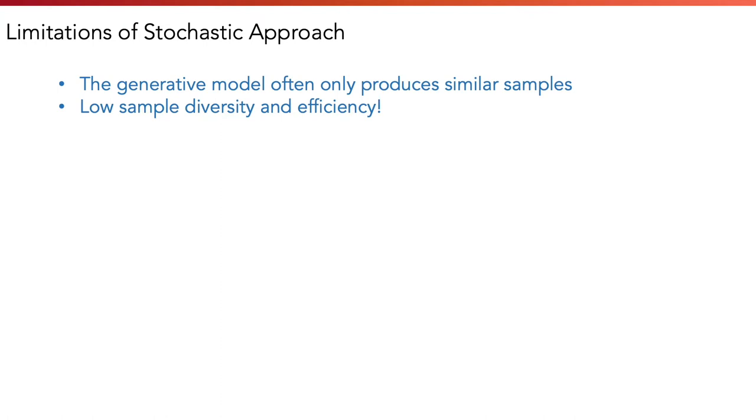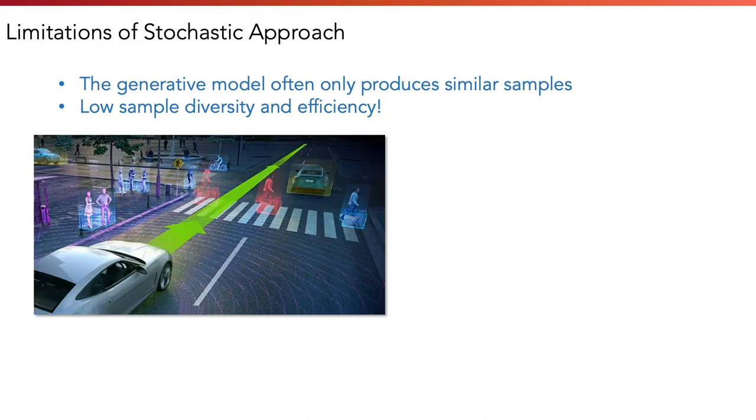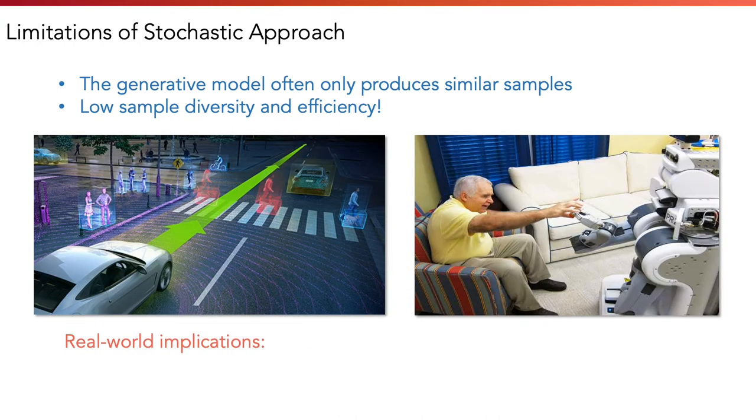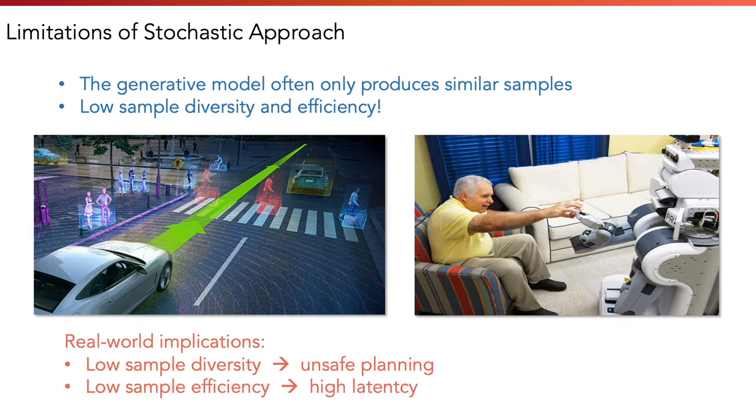This has serious real-world implications, because in many applications, like self-driving vehicles or assistive robots, low sample diversity can lead to unsafe planning because the system cannot anticipate various possibilities. And low sample efficiency means the system has to compute many samples, which can lead to high latency in real-time applications.